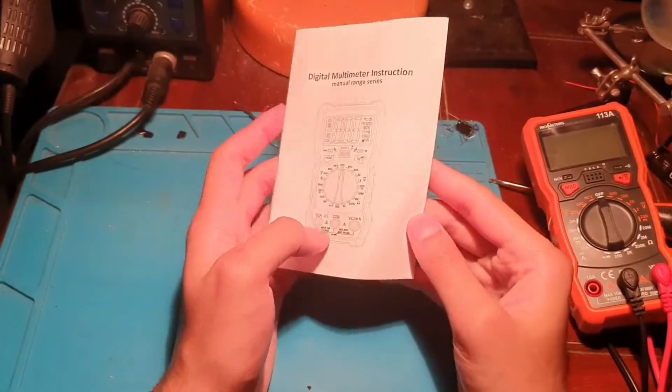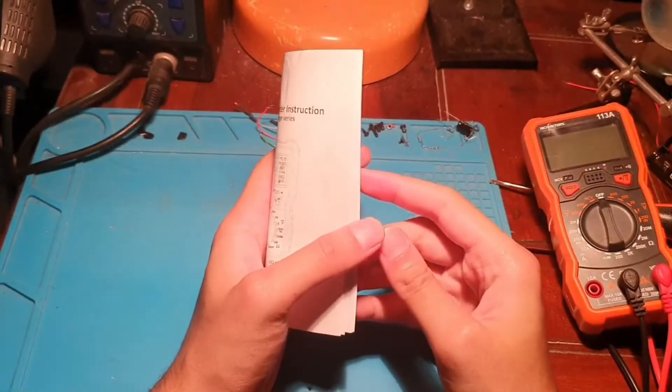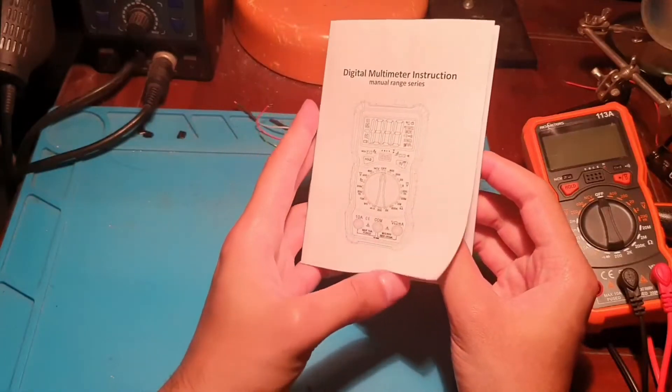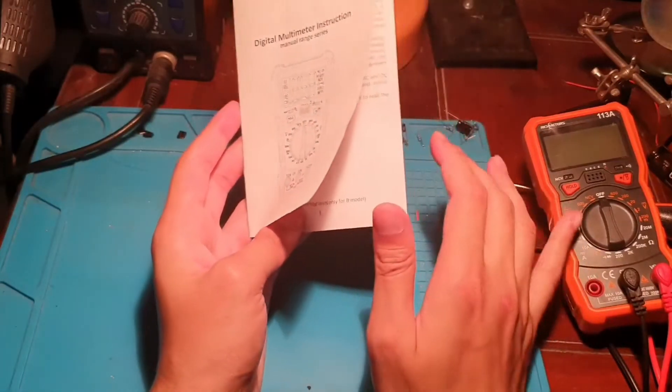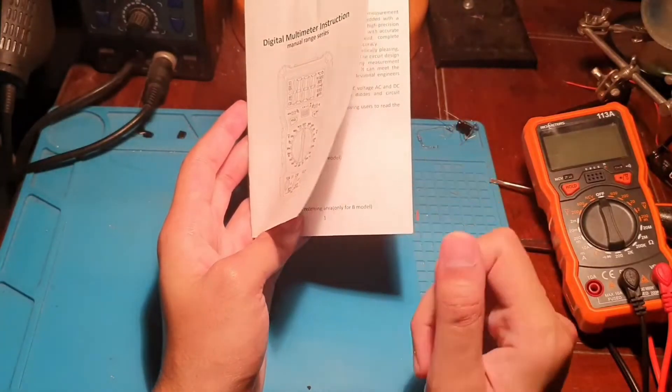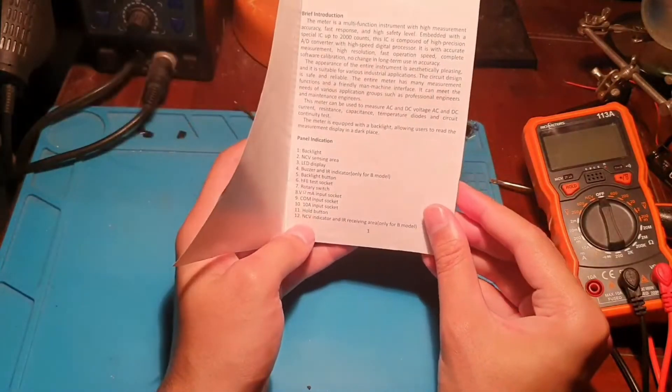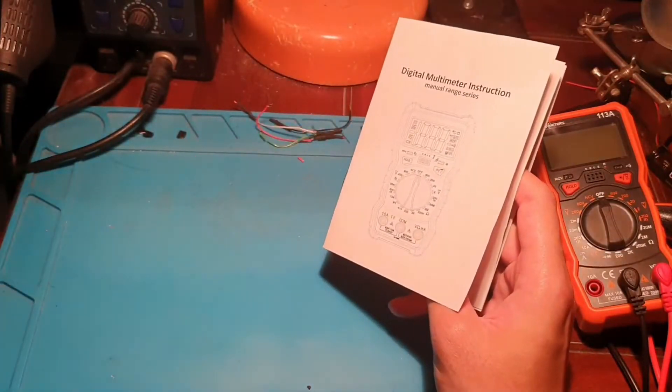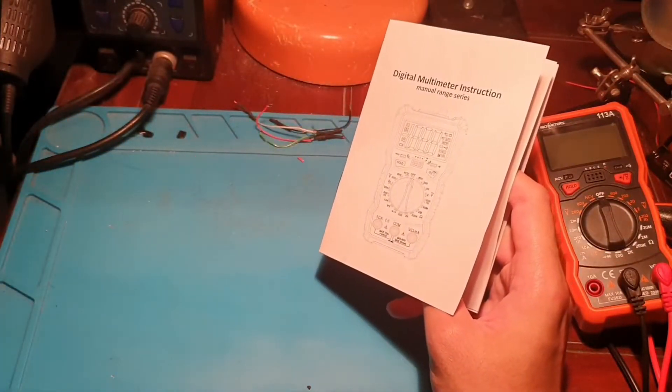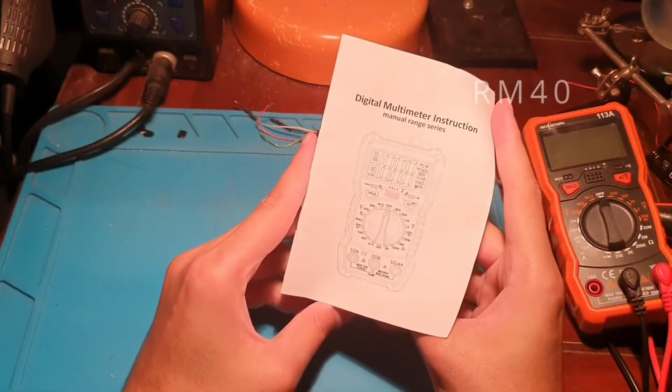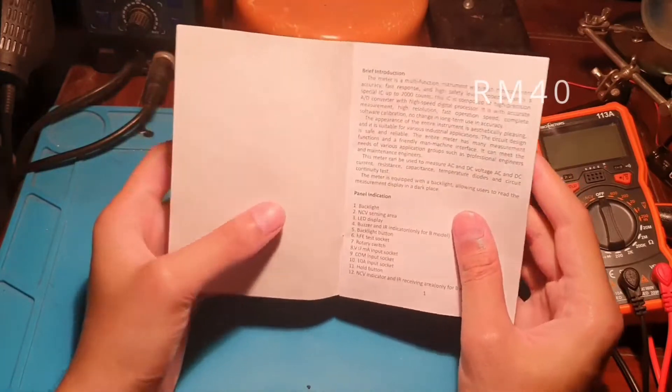Guys, this multimeter I bought around 30 ringgit on discount. Normally it's around 40 to 48 ringgit. The 40 ringgit is around 10 dollars, something like that. This is the digital multimeter instruction manual, range series.